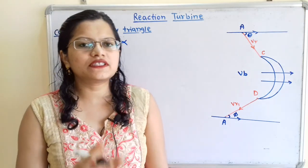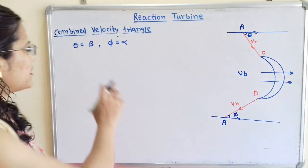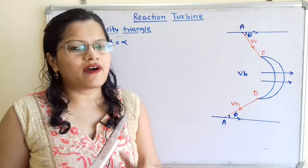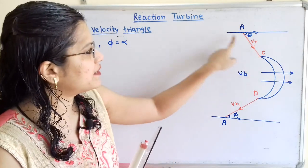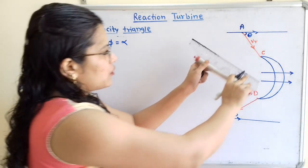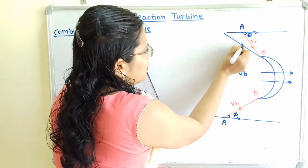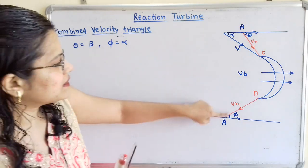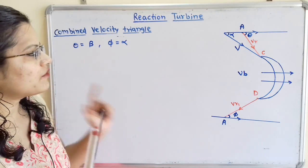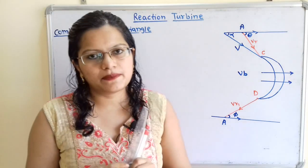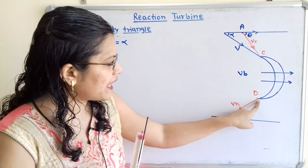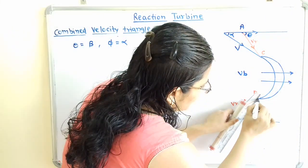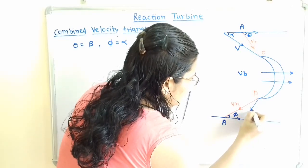Now we will complete the velocity triangle diagram for the reaction turbine. For a reaction turbine, theta equals beta and phi equals alpha. Angle alpha is the angle made by the absolute velocity V at the inlet tip to the direction of blade motion. Angle beta is the angle made by the absolute velocity V1 at the outlet tip to the direction of blade motion.